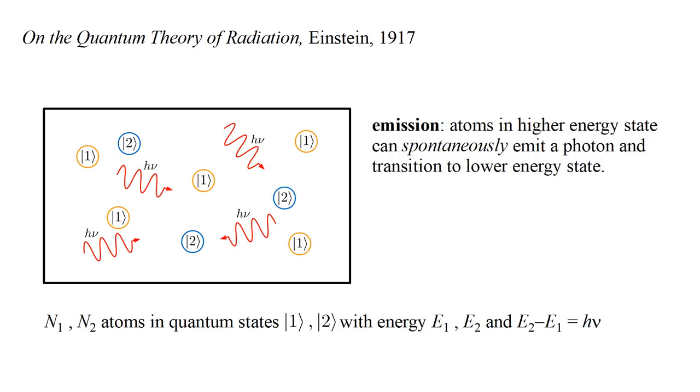One possible radiation process is emission. An atom in the higher energy state can spontaneously emit a photon and transition to the lower energy state. This will decrease N-two and increase N-one.